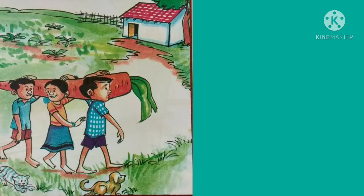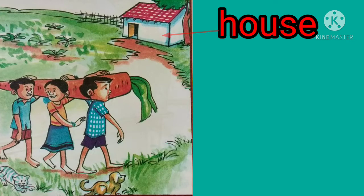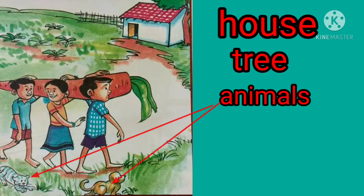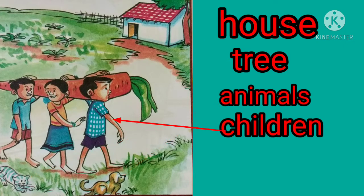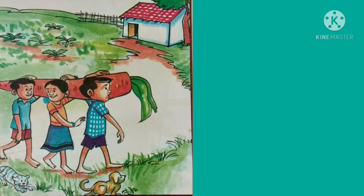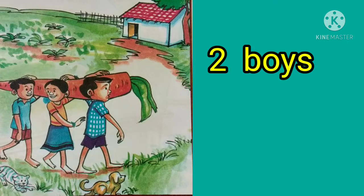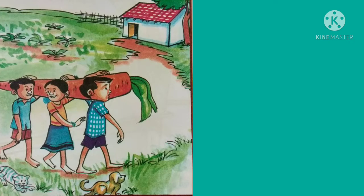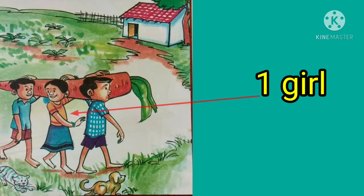Look at this picture and answer the questions. What do you see in this picture? Yes, there is a house, a tree, two animals, three children. Okay, how many boys are there in the picture? There are two boys in this picture. How many girls are there in the picture? One girl.